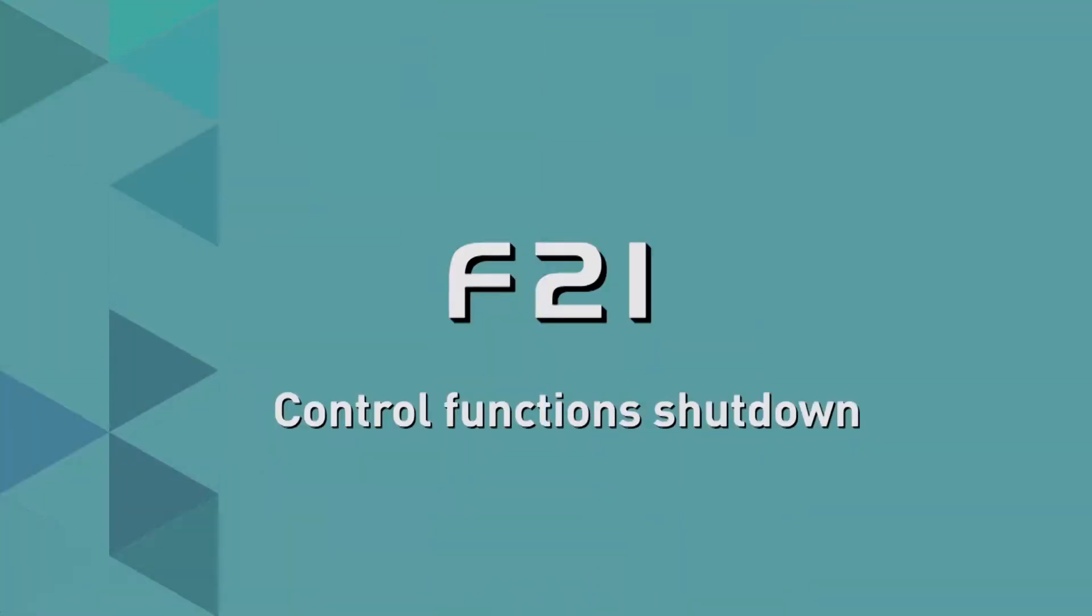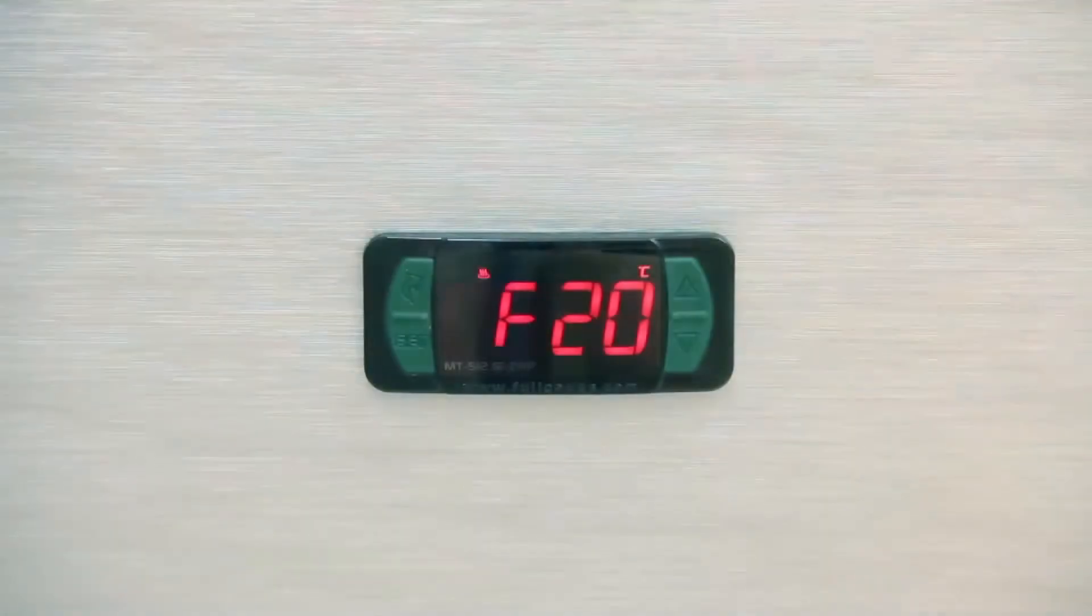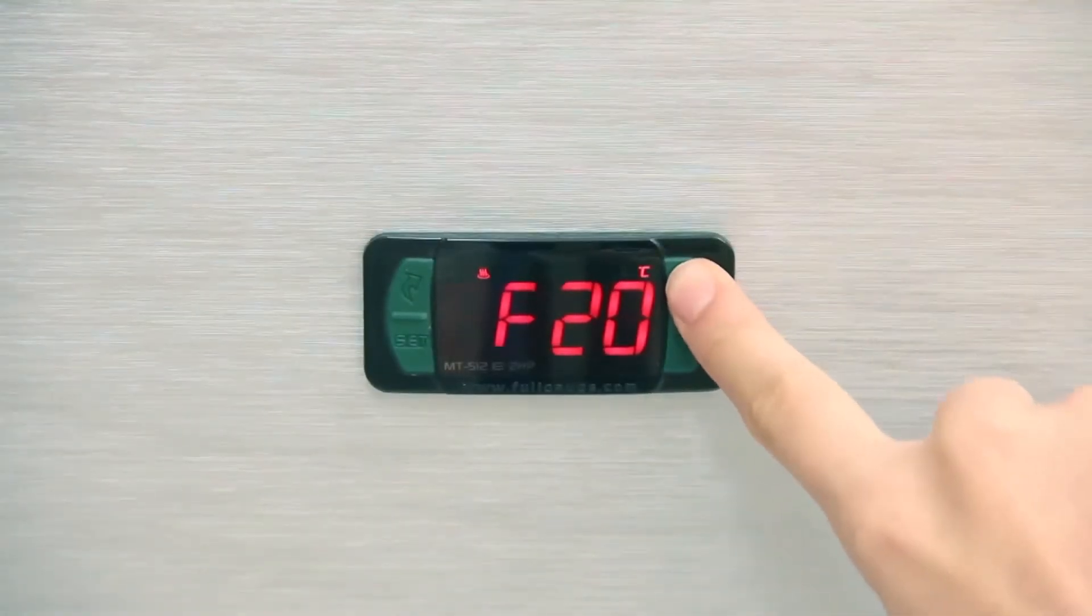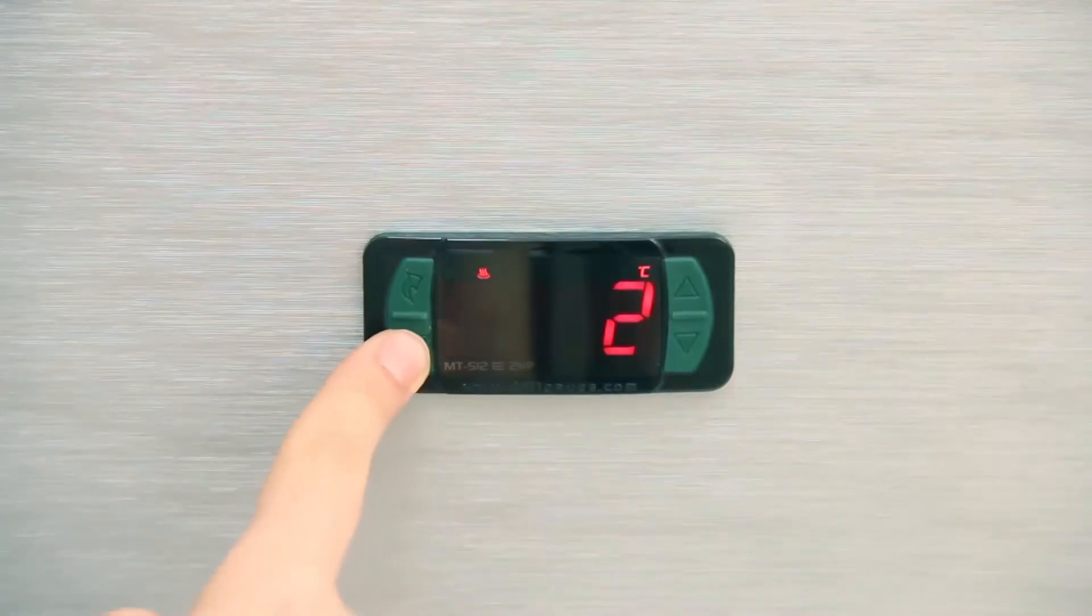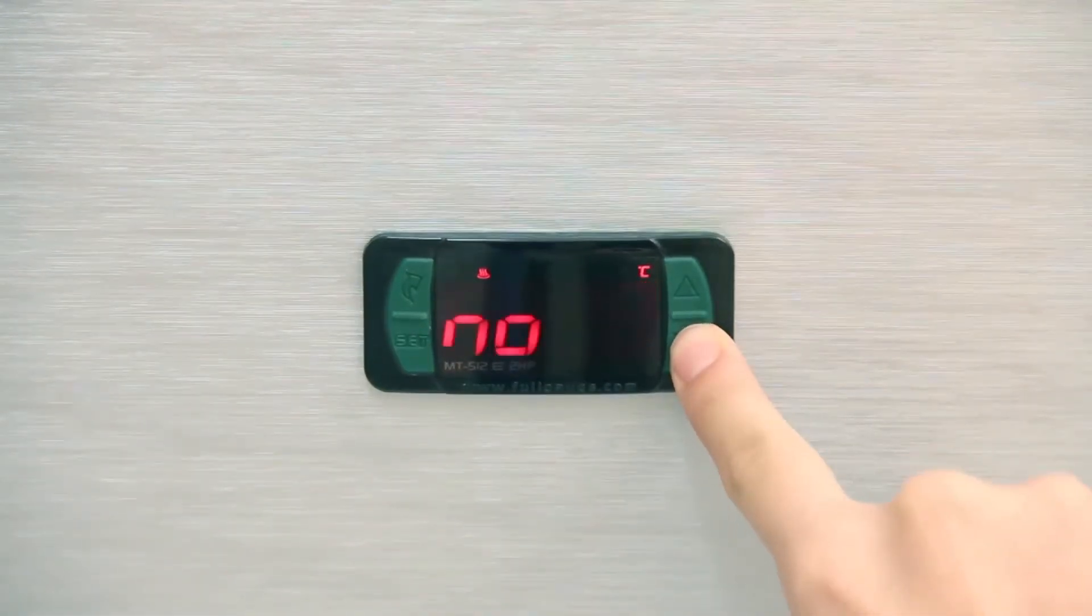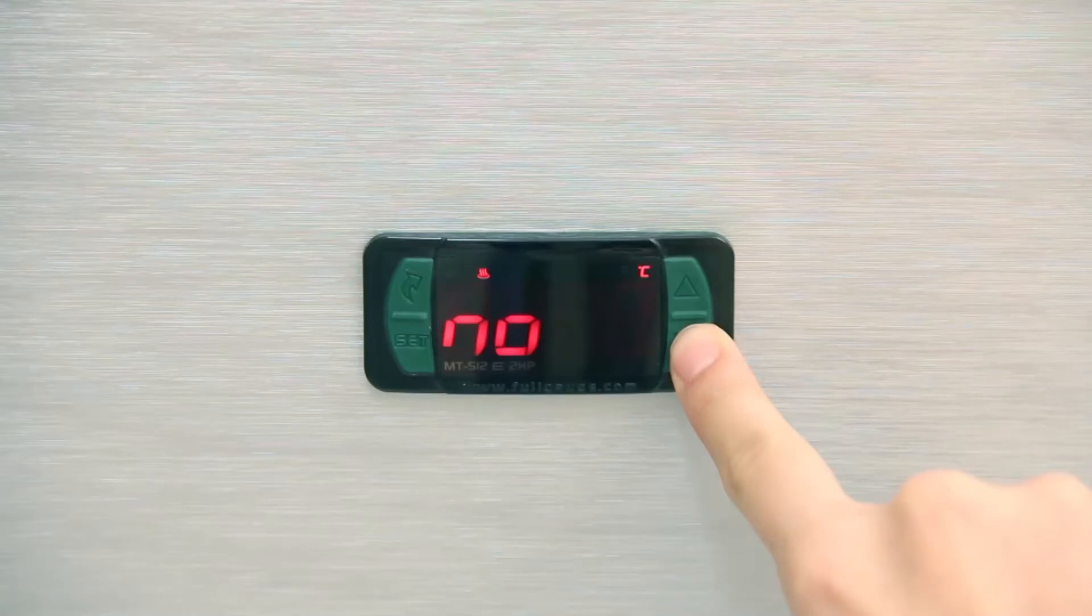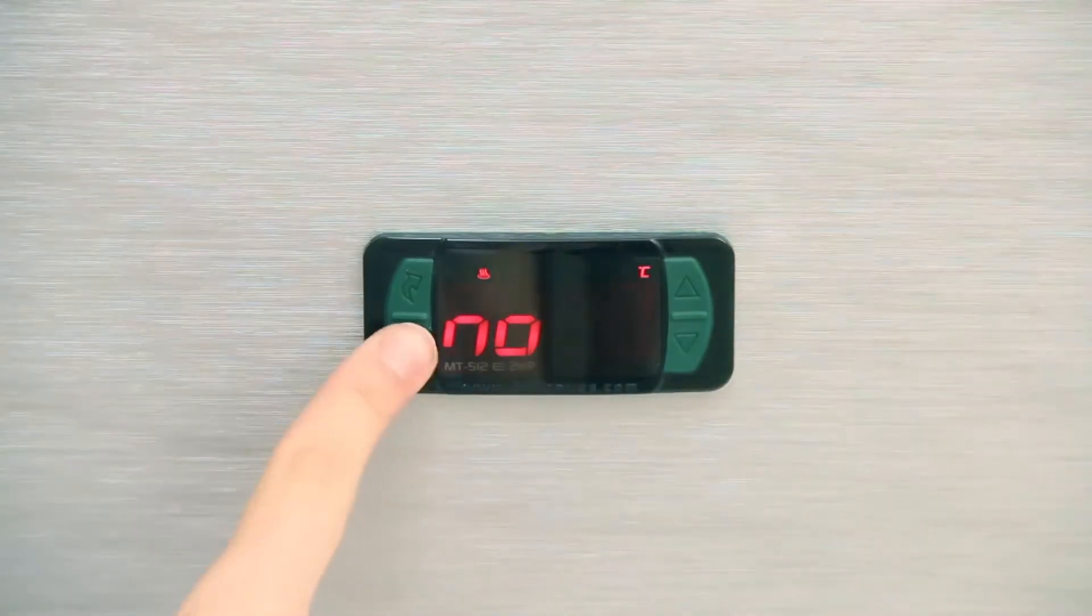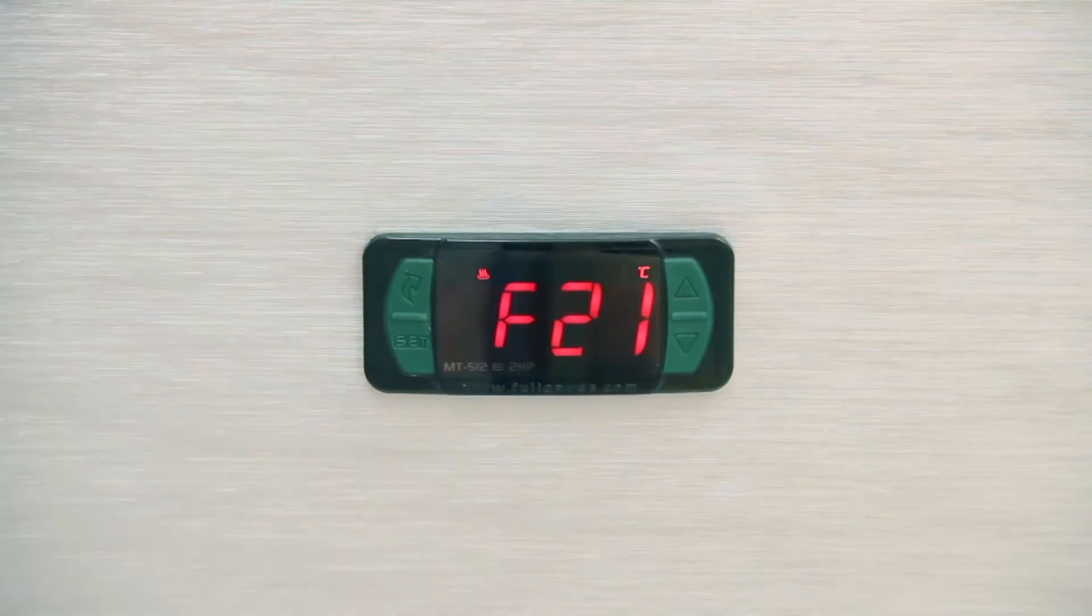F21 Control Functions Shutdown: It allows the shutdown of the controller output for maintenance. Select No so as not to turn off the output or enter To to turn it off. In the examples, we chose not to shut it down, as this setting is adopted only in case of shutdown for maintenance.